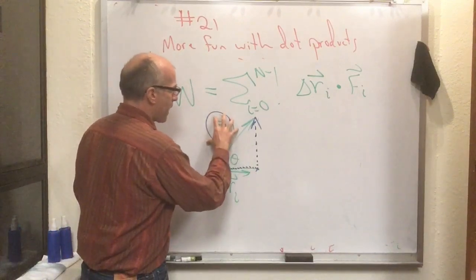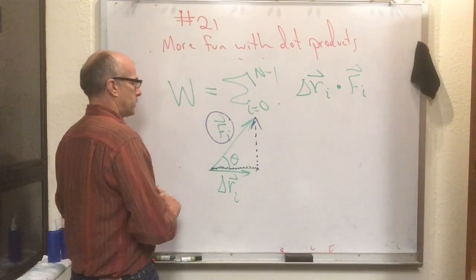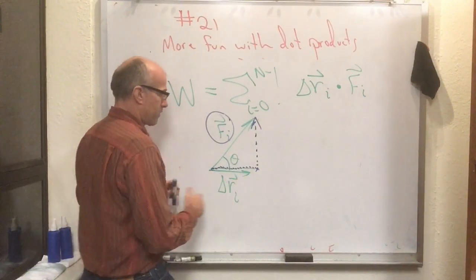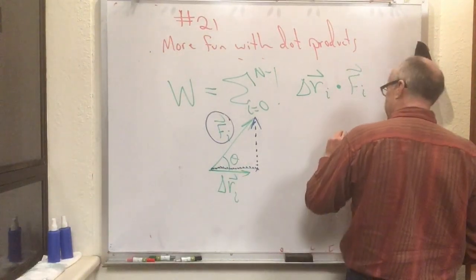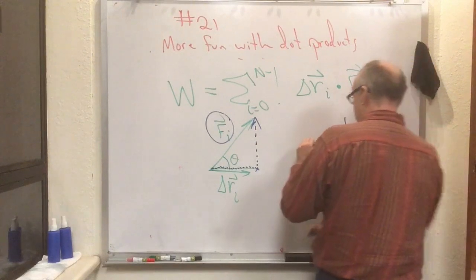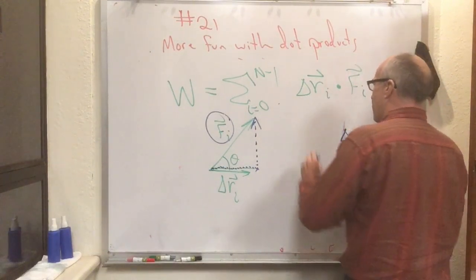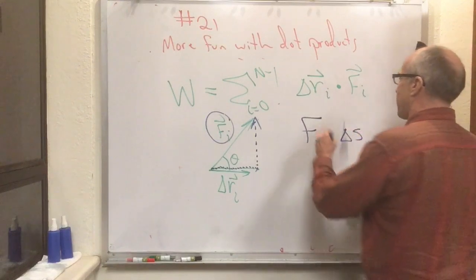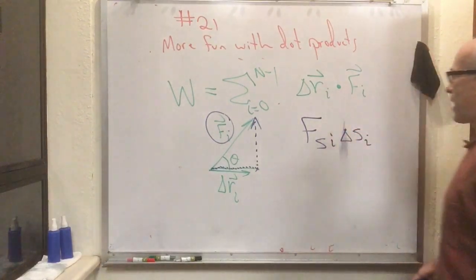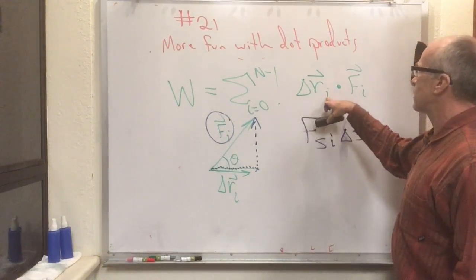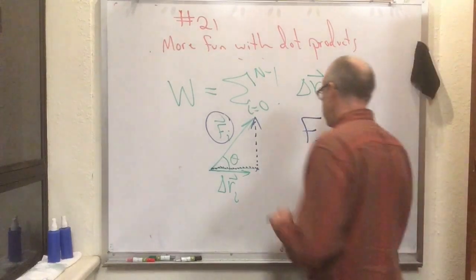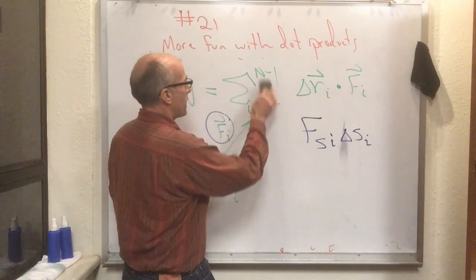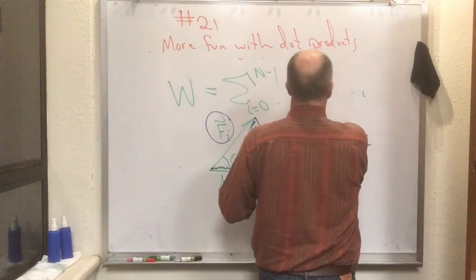The component of F that is in the direction of the motion is what appears on one side, and then the amount of motion in the direction of motion appears on the other. If we call the direction of motion s, and say a little distance delta-s has been traversed, then delta-r_i dot F sub i equals F_s sub i times delta-s sub i. The sum then becomes the sum from i equals zero to n minus one of F_s_i times delta-s_i.